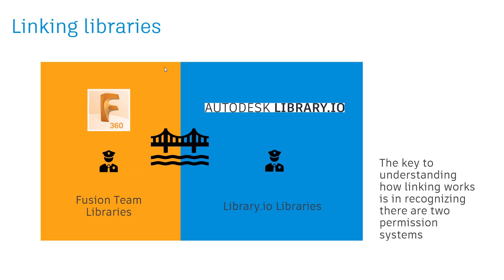Now, what about linking libraries? It's possible to take a Fusion team library — remember, that infrastructure is completely separate. When you're working in Fusion 360, your libraries are created in Fusion team, and on their own they have no interaction with library.io. However, you can link a Fusion team library to a library.io library. At that point, you're using the same bridge as you did with Eagle and library.io: a manual push-and-pull workflow. So you can take changes from your Fusion team library and push them to a linked managed library on library.io, and likewise in Fusion team you can pull changes from the managed library in library.io.